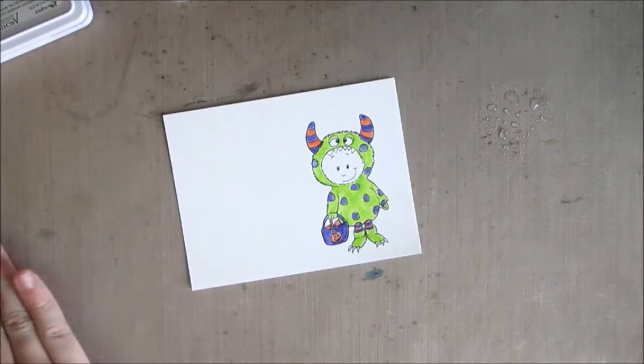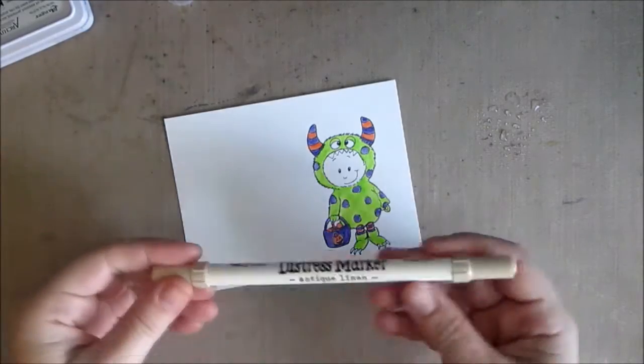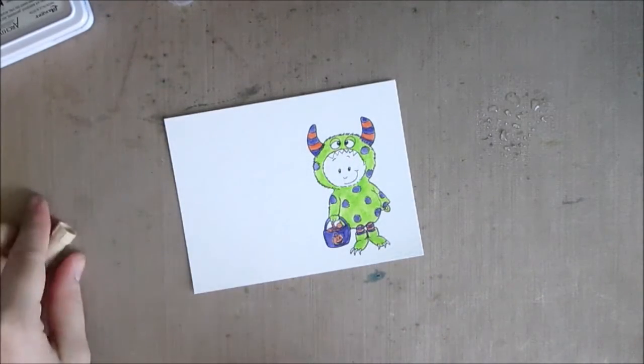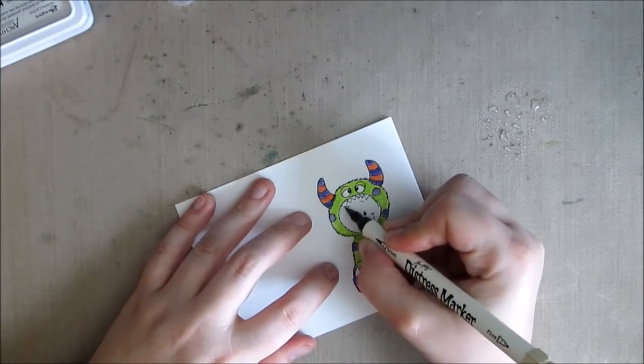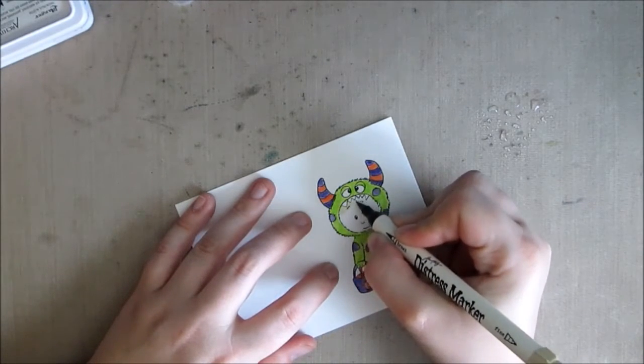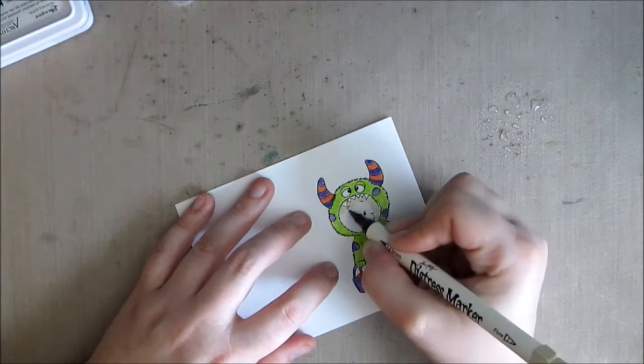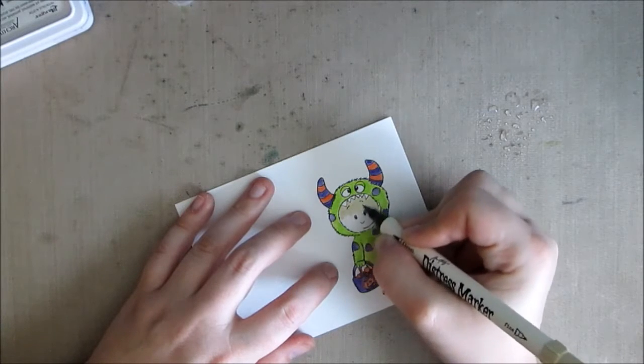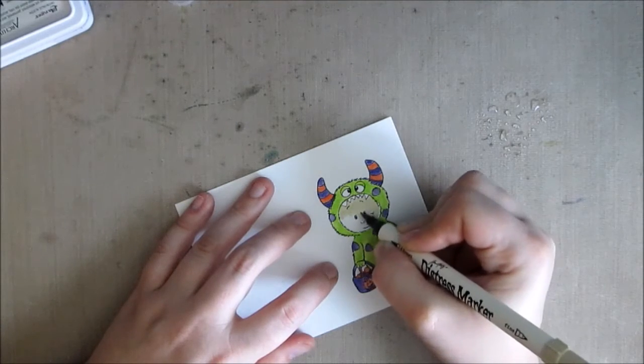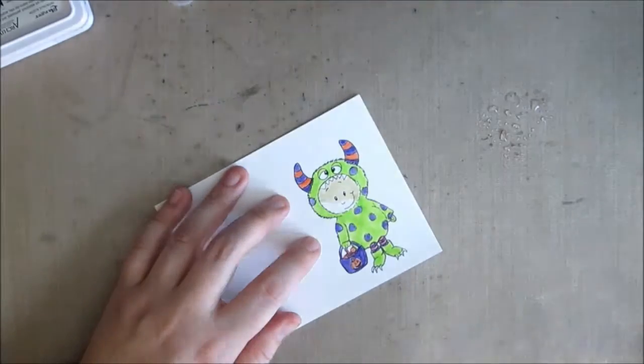Now I want to color in his skin but with Inktense pencils, the set that I have, the 24-piece set, your skin color range is pretty limited. So I'm going to actually switch over to a distress marker for this. I'm using the antique linen distress marker and I'm going to just add it where I want it to be the darkest which would be under the hood and around to the right on this image. I'm just going to kind of color that on and then I will spread it out with the brush.